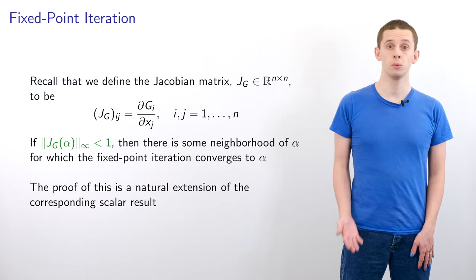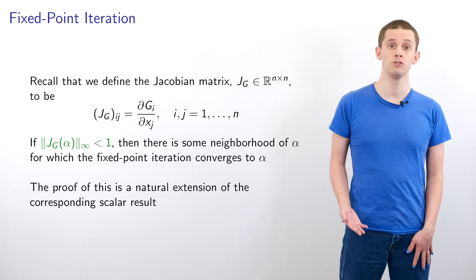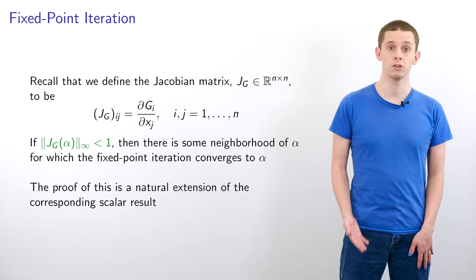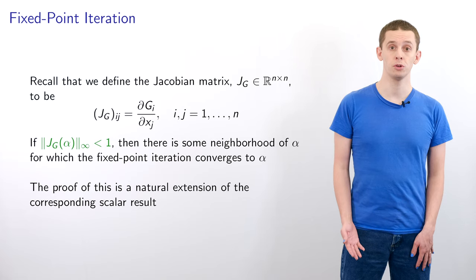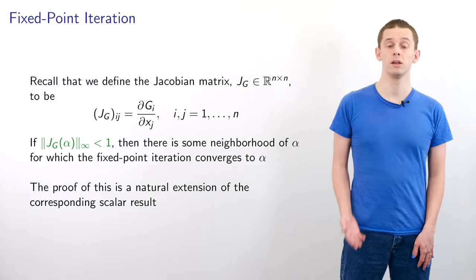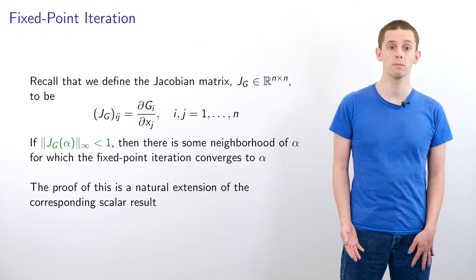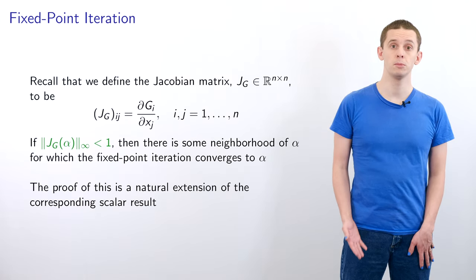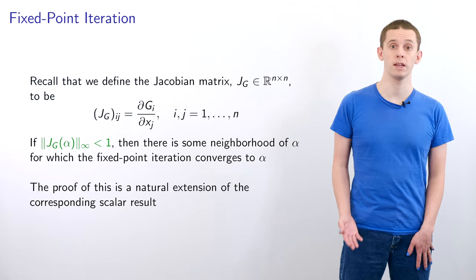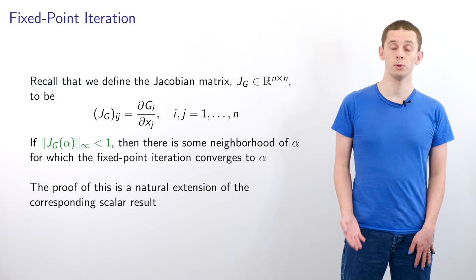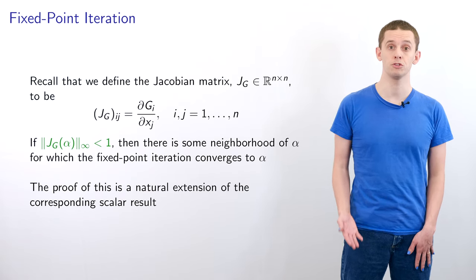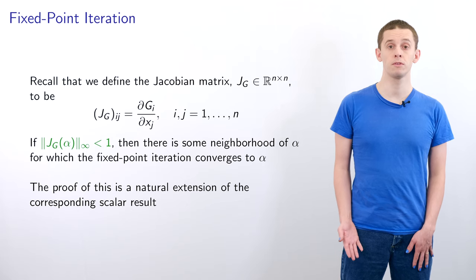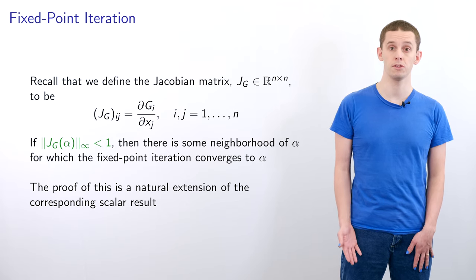We can also define the n-by-n Jacobian matrix J_g, where the (i,j) component is equal to the partial derivative dg_i/dx_j. And if the infinity norm of J_g at alpha is less than 1, then there will be some neighborhood of alpha for which the fixed-point iteration will converge to alpha. The proof of this is a natural extension of the scalar case.